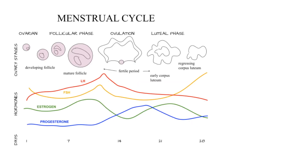Let's begin by going over the menstrual cycle very briefly. If you'd like more information, please let us know in the comments below and we can make a separate video. The menstrual cycle is a tightly coordinated cycle of stimulatory and inhibitory effects and on average, it lasts about 28 days.